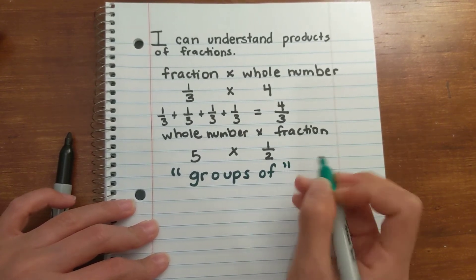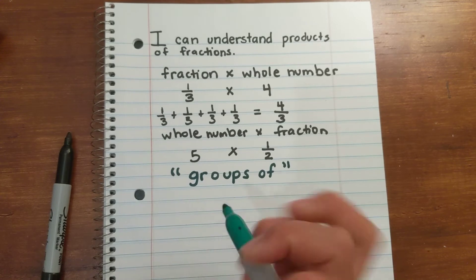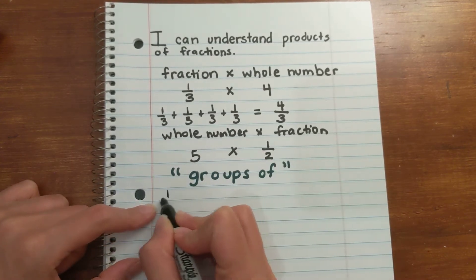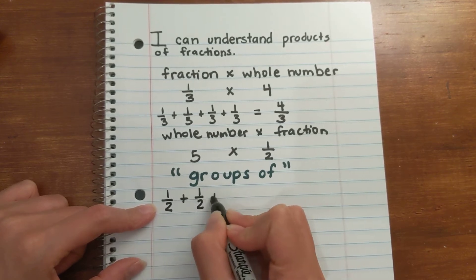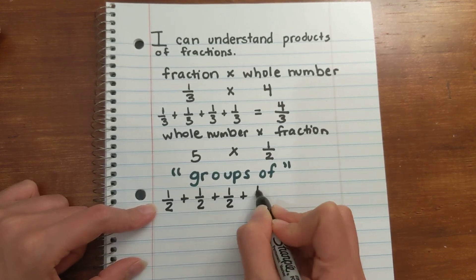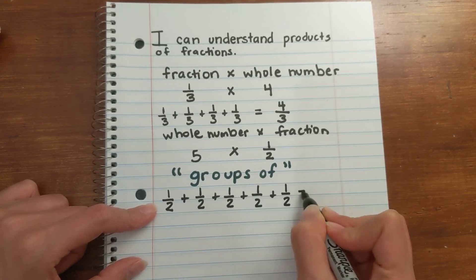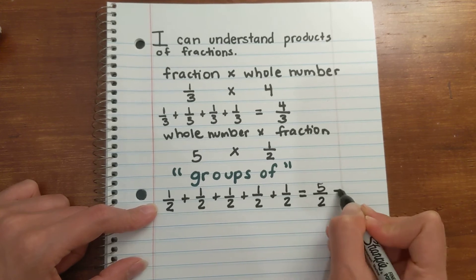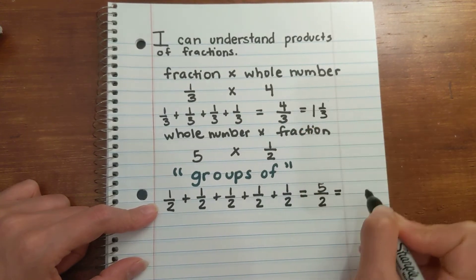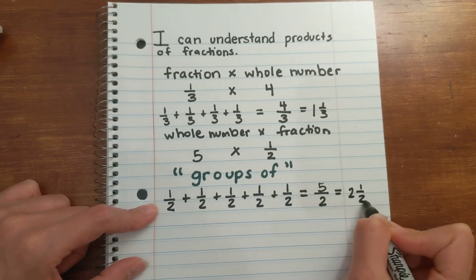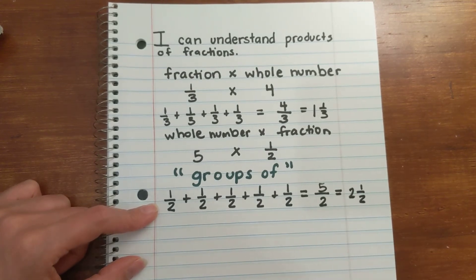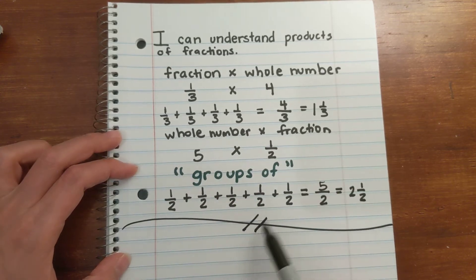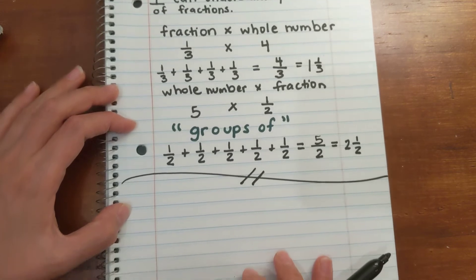When you have a whole number and a fraction, think 'groups of,' think repeated addition. I have five times one half, so: one half one time, two times, three times, four times, and five times — one, two, three, four, five. My denominator stays the same: five over two. And you can also write that as a mixed fraction.